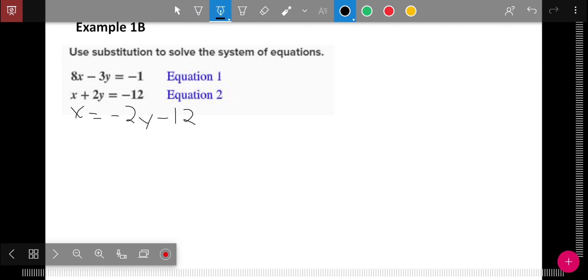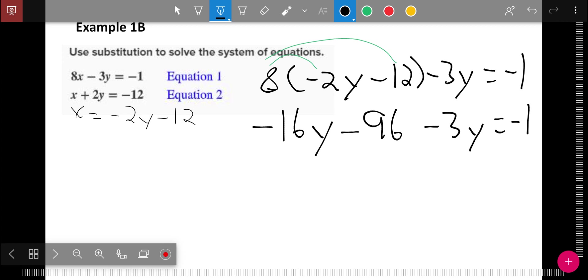Now I go back to the first equation. 8X, but X is now negative 2Y minus 12. Minus 3Y equals negative 1. Up here at top, I have to distribute. So I get negative 16Y. 8 times negative 2 is negative 16Y. Minus 96. 8 times 12 is 96. Still have minus 3Y. Still have equals negative 1. Negative 16Y minus 3Y is negative 19Y. Minus 96 equals negative 1. I add the 96 over. I get negative 19Y equals 95. I divide by the negative 19, and I get negative 5.